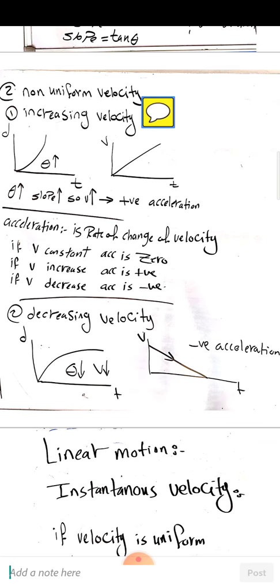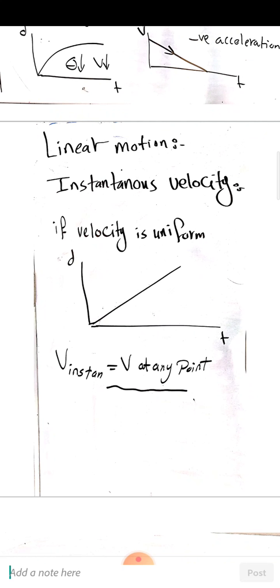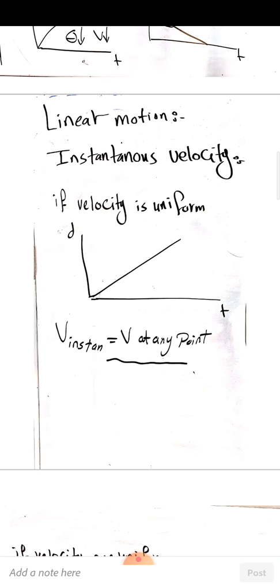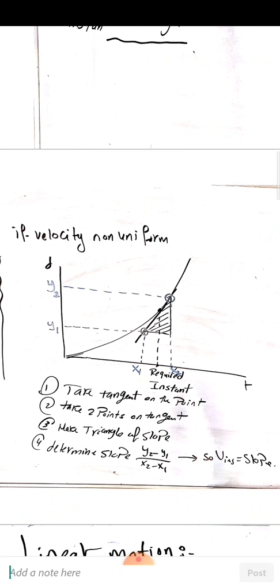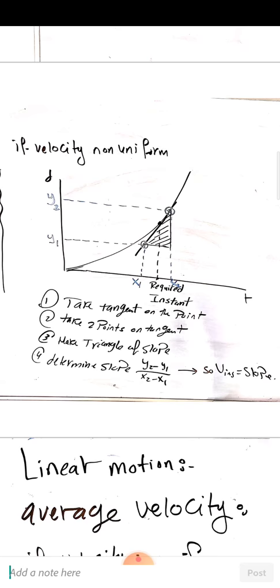Linear motion also involves instantaneous velocity — the velocity at a required instant. If velocity is uniform, the displacement-time graph is a straight line with constant θ, so the instantaneous velocity at any point equals the constant velocity. If velocity is non-uniform, take a tangent at the required point, pick two random points on that tangent, form a slope triangle, and calculate: slope = (y2 - y1) / (x2 - x1). The instantaneous velocity equals this slope.